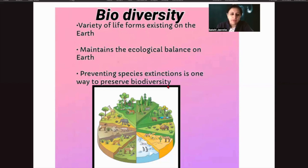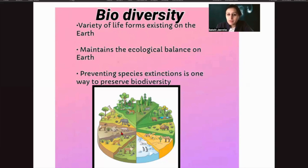In this diagram, we can see the arctic region, the xerophytic region, the grasslands, the forests, and various places where life forms exist. We will talk about how organisms exist in those areas, what their benefits are, and how they manage in those environments.